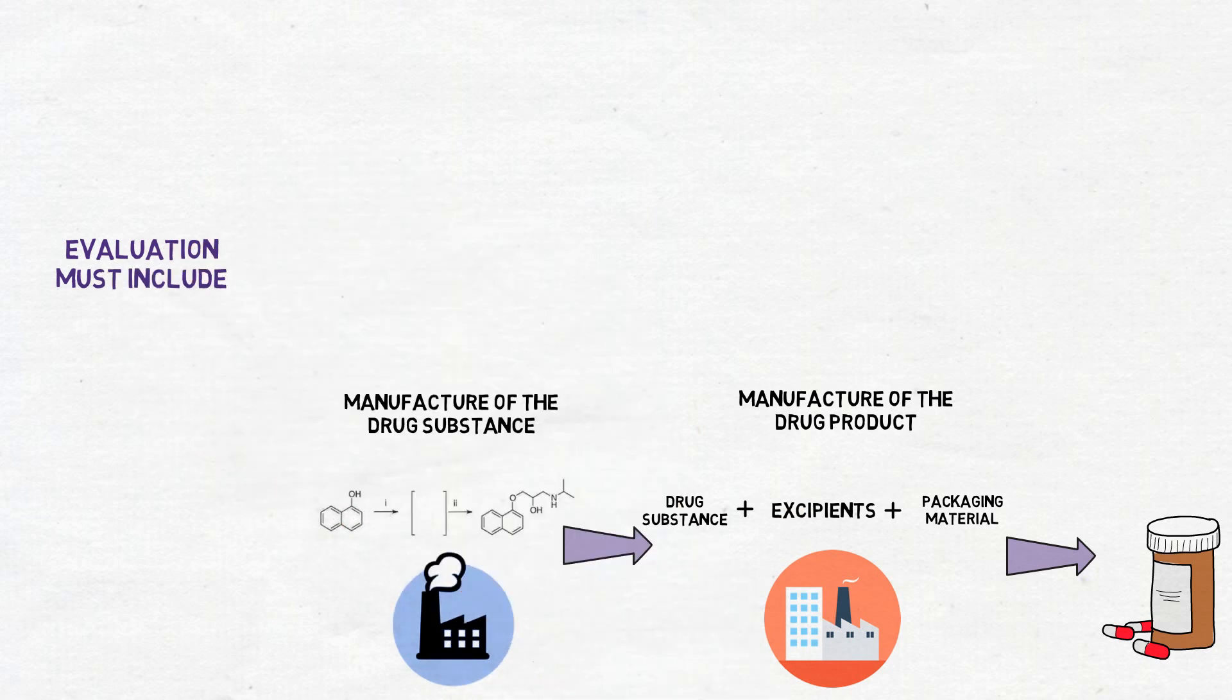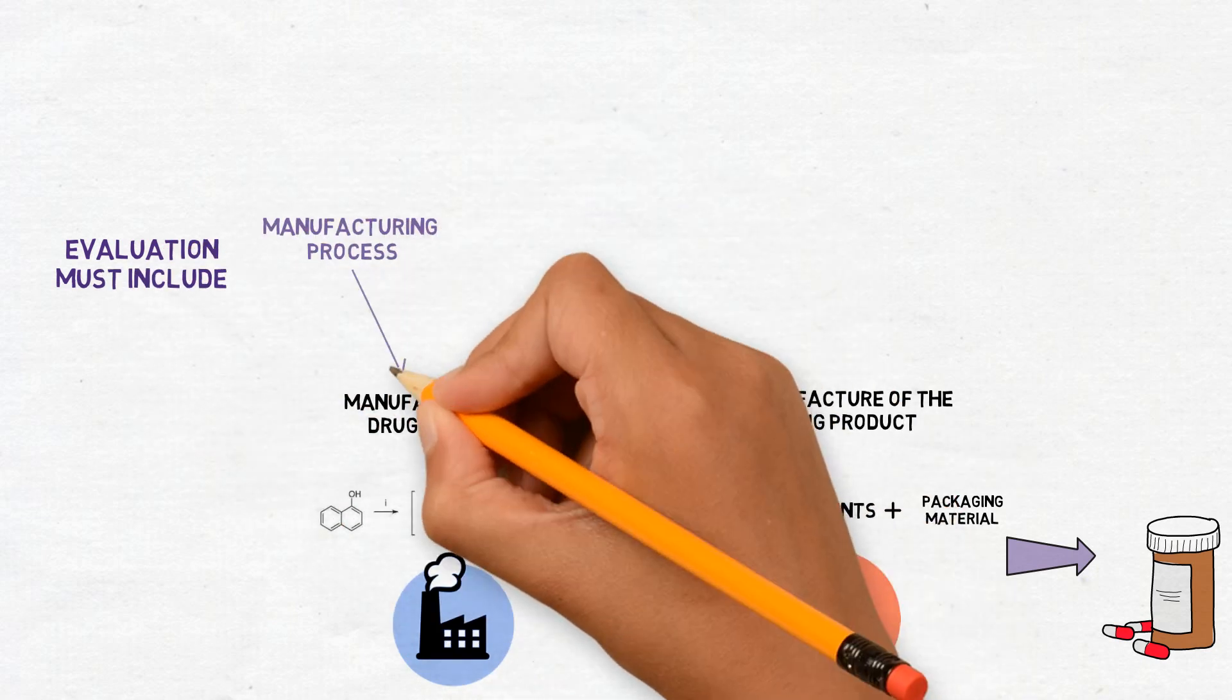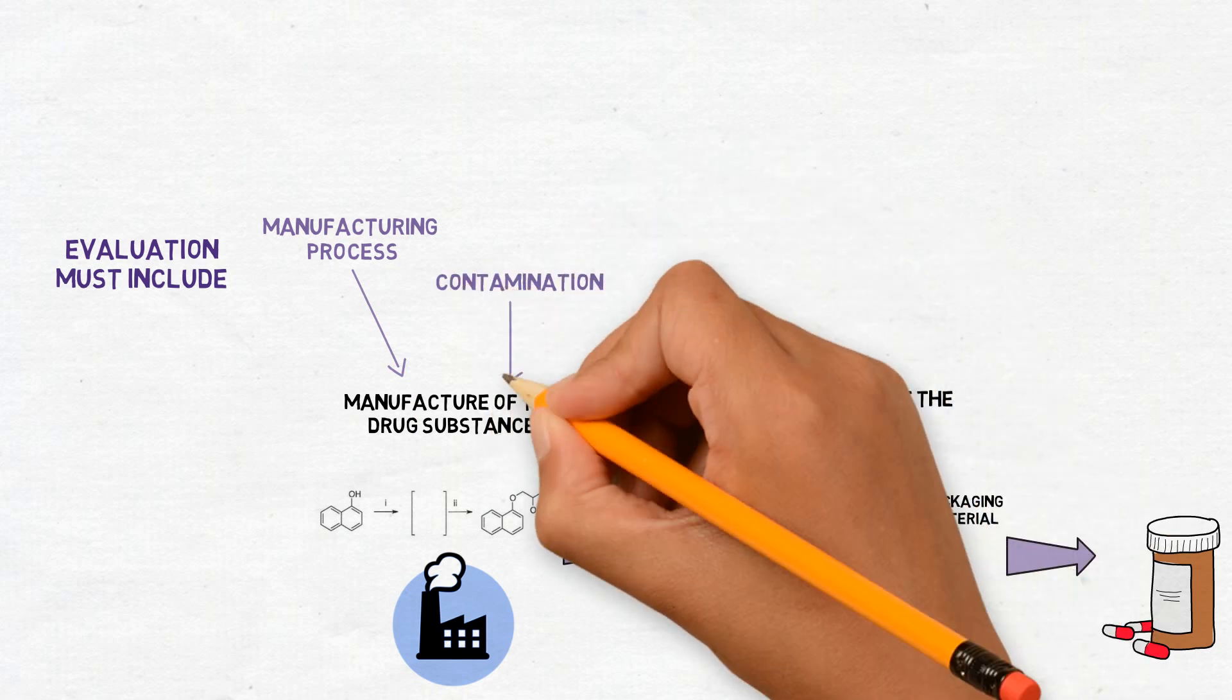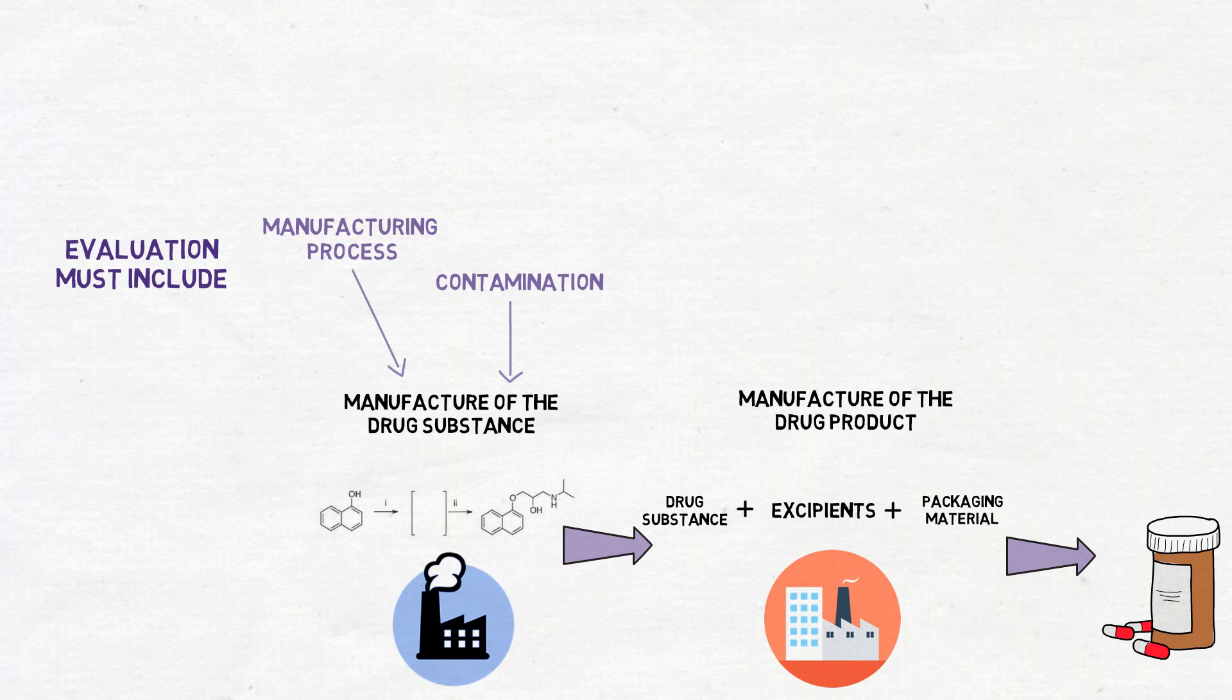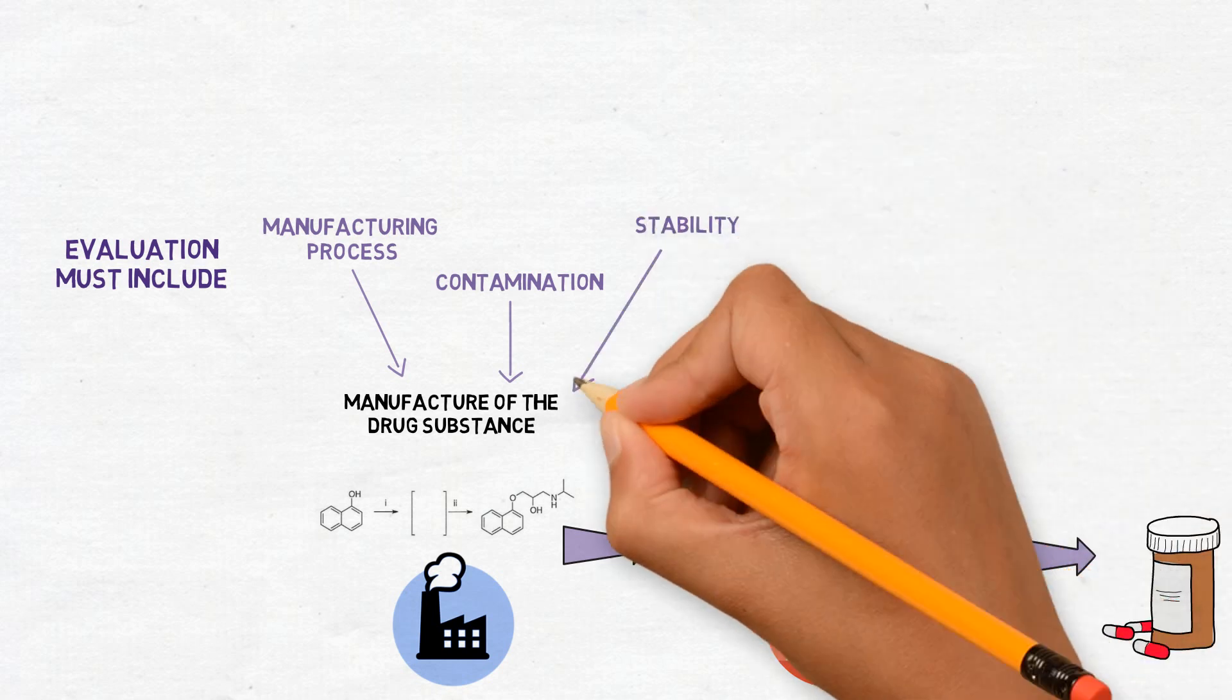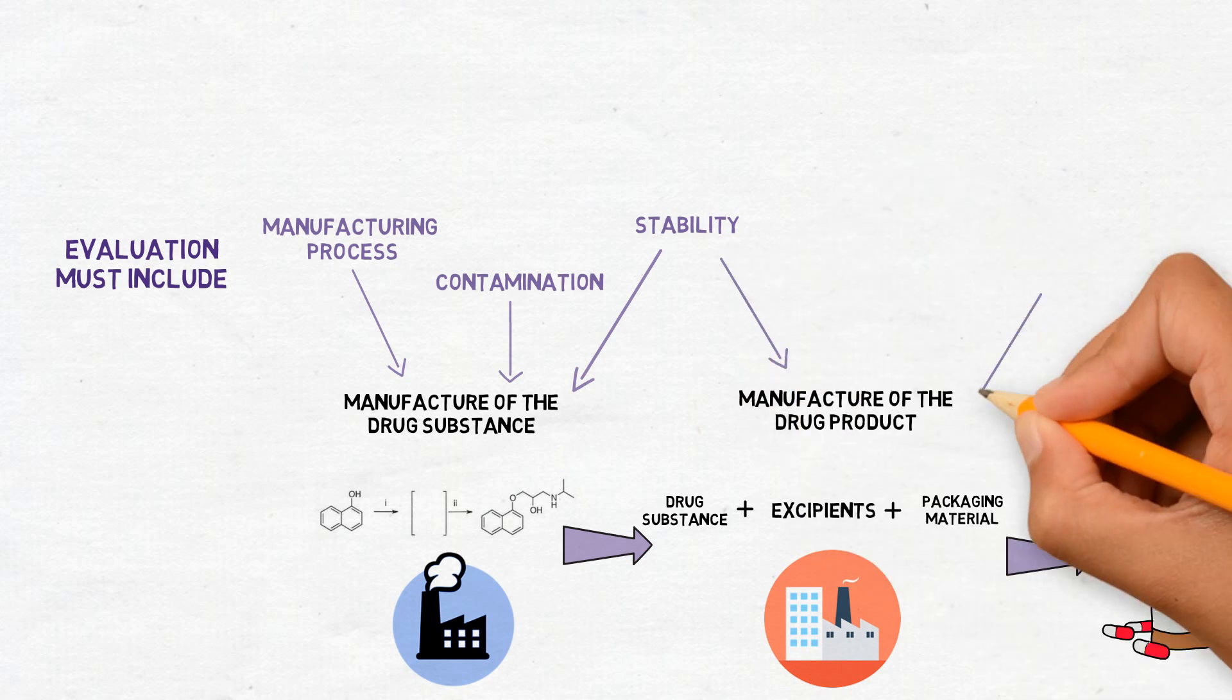The manufacturing process of the drug substance must be evaluated, considering also the possible contaminations that could happen at this stage. The stability of the drug substance must also be considered, which can have an impact on the stability of the drug product as well.